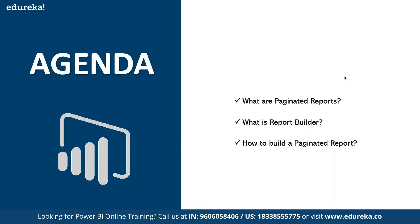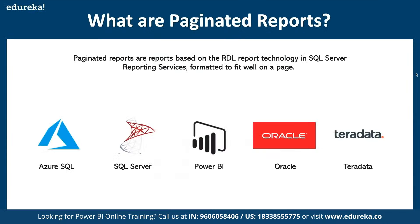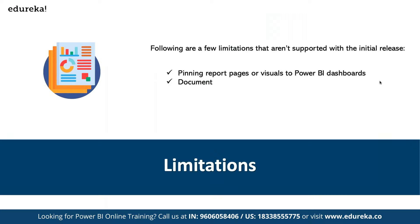We are also going to discuss the concept of paginated reports in Power BI. Paginated reports are based on RDL report technology from SQL Server, used as part of reporting services, and they are formatted to fit well on a page. Multiple data sources are supported including Azure SQL and SQL Server. There are certain limitations — for example, you cannot pin paginated reports to a Power BI dashboard, document maps are limited, drill-through reports are not available, and shared data sources and shared datasets are also not fully supported.